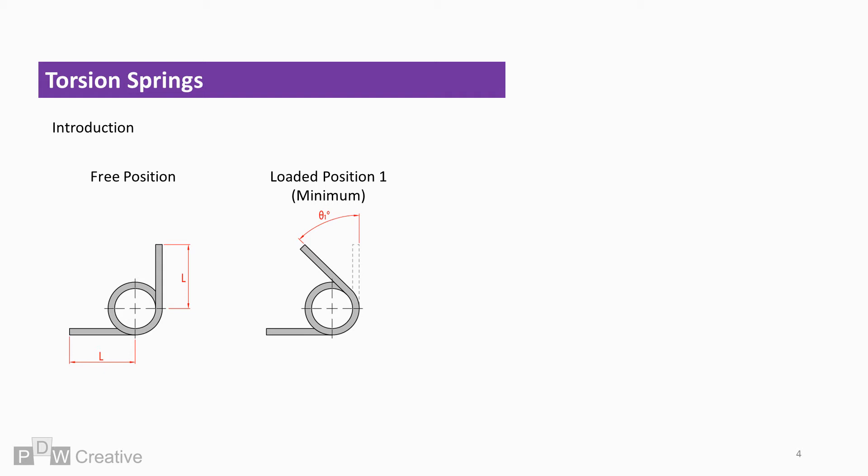This minimum loading position or angle gives us the lowest torque response from the spring. The vertical arm is then rotated to the maximum operating position, and this gives us the maximum torque response.